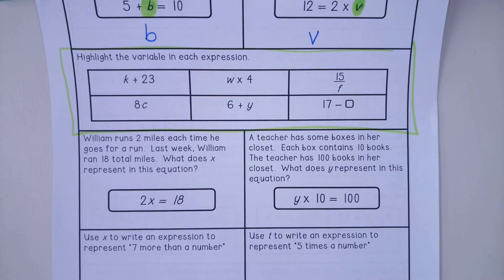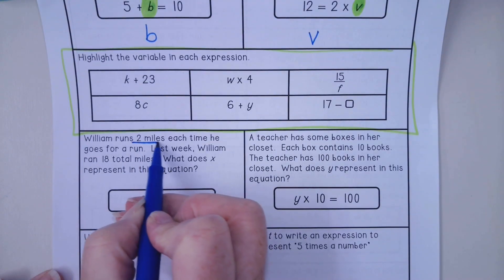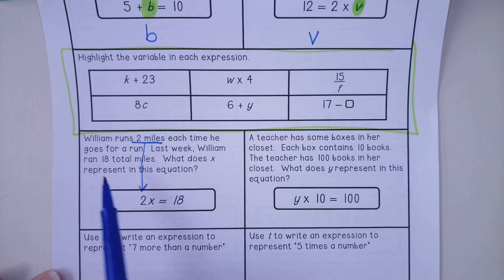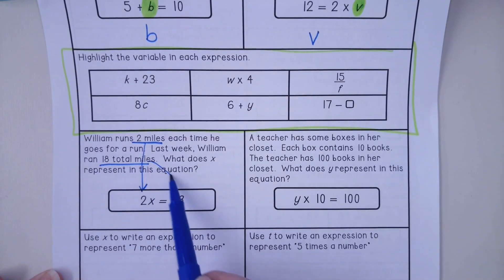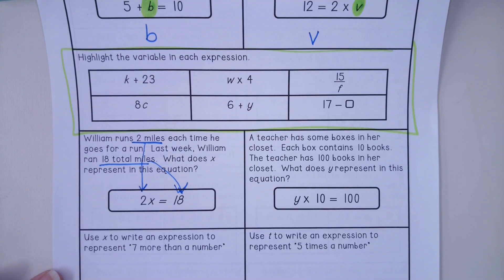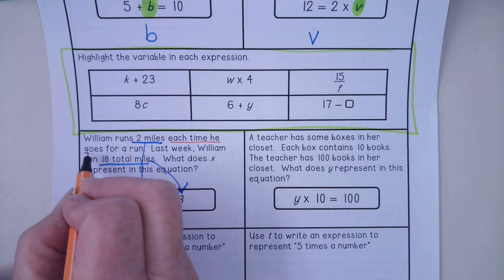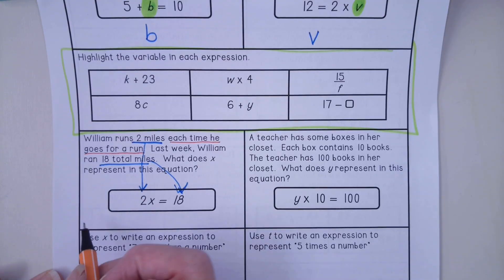Last week William ran 18 total miles. What does x represent? All right, so we have in our question 2 miles, and you will see that they put that right there. And you know that he ran a total of 18 miles. So what is our variable? In this sentence, what does it mean, what is it representing?